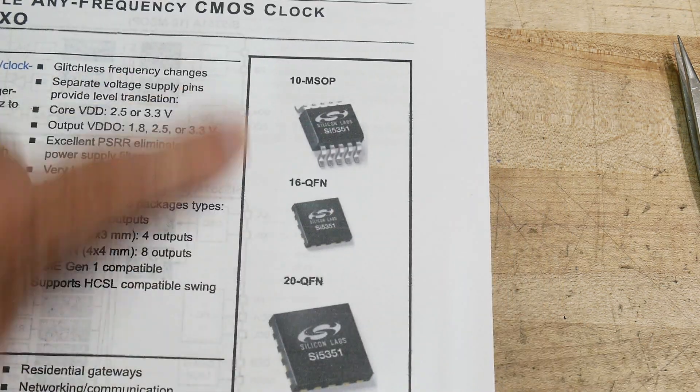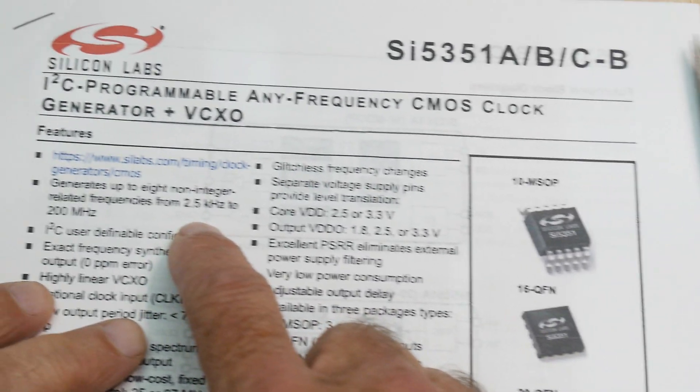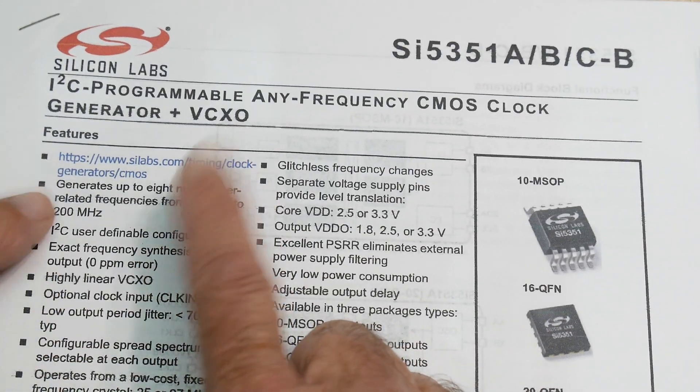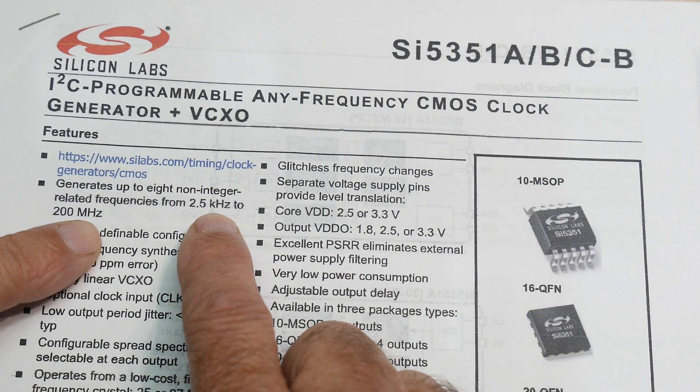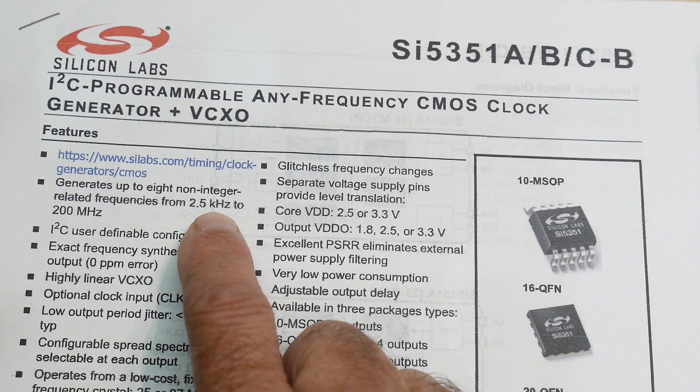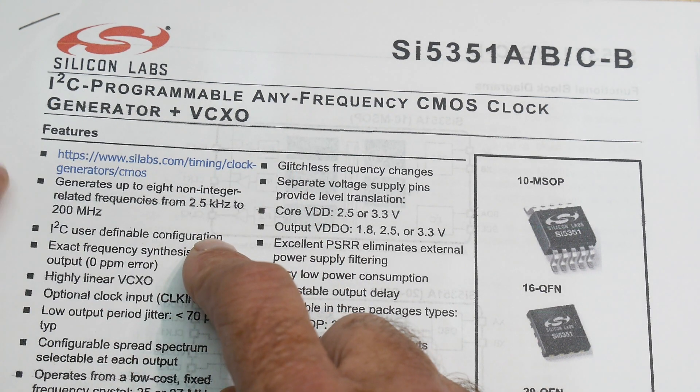And there's a family of them. There's different chips. But this chip can generate frequencies from 2.5 kilohertz to 200 megahertz. So that's certainly within the range of our VHF radio. So we can get up here to 200 megahertz just fine. So that's interesting. I squared C.